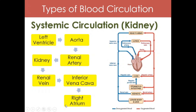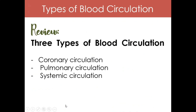Those are the three types of blood circulation. To review: we have coronary circulation, where blood is delivered to the heart itself; pulmonary circulation, where blood is carried to the lungs to receive oxygen; and systemic circulation, whose main goal is to provide oxygen and nutrients to the different parts of our body while removing carbon dioxide and metabolic waste from the organs.